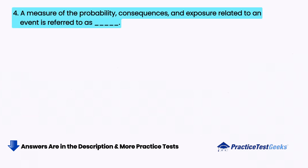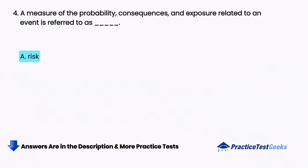A measure of the probability, consequences, and exposure related to an event is referred to as blank. A. Risk, B. Evaluation.